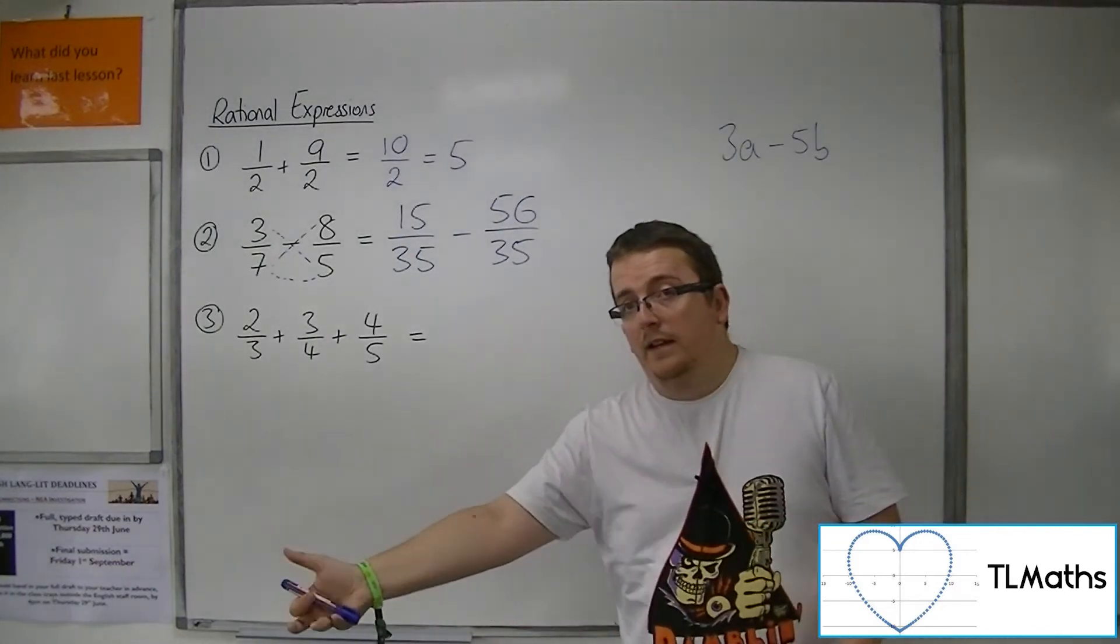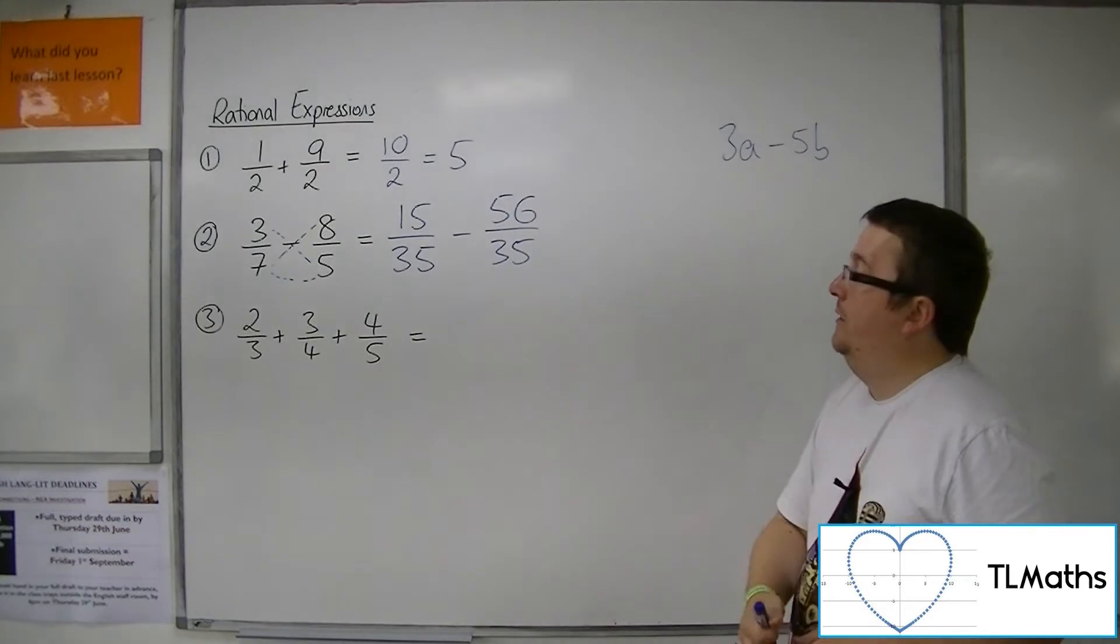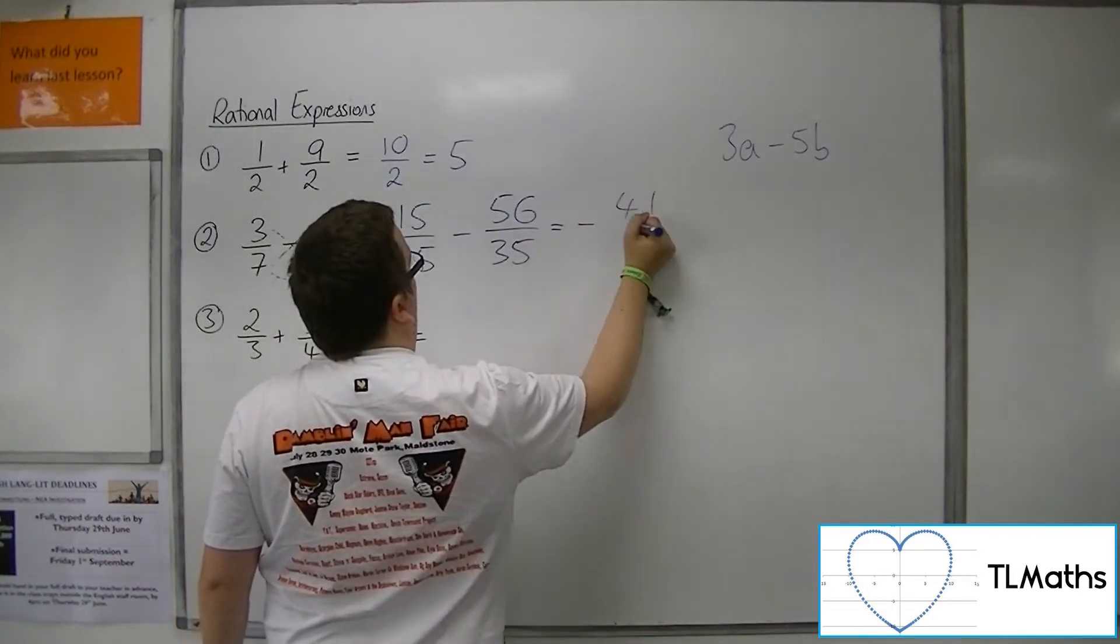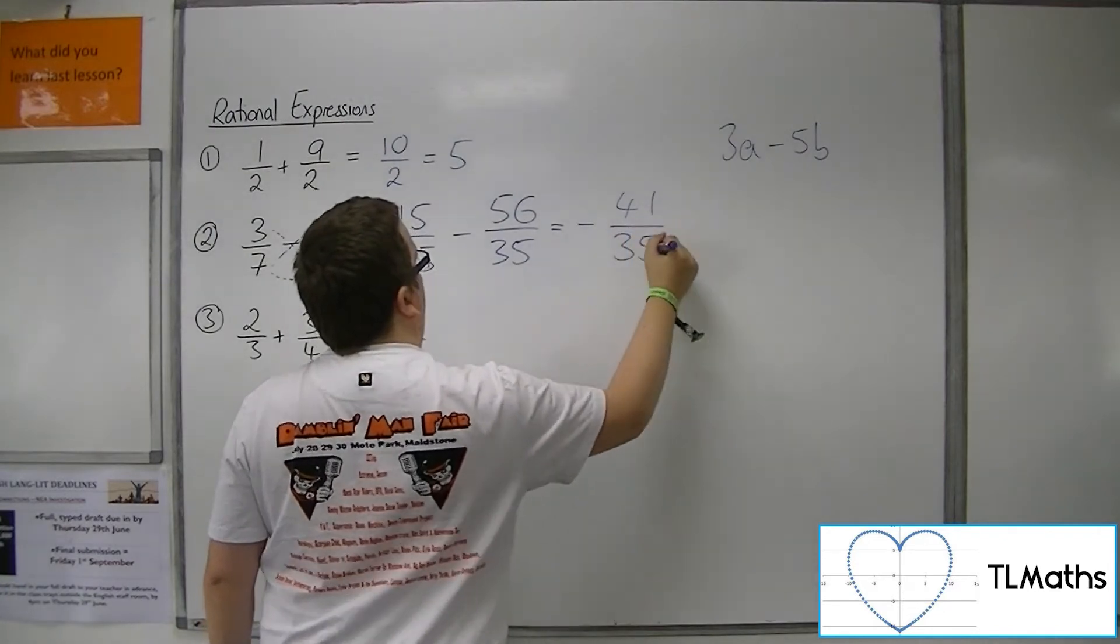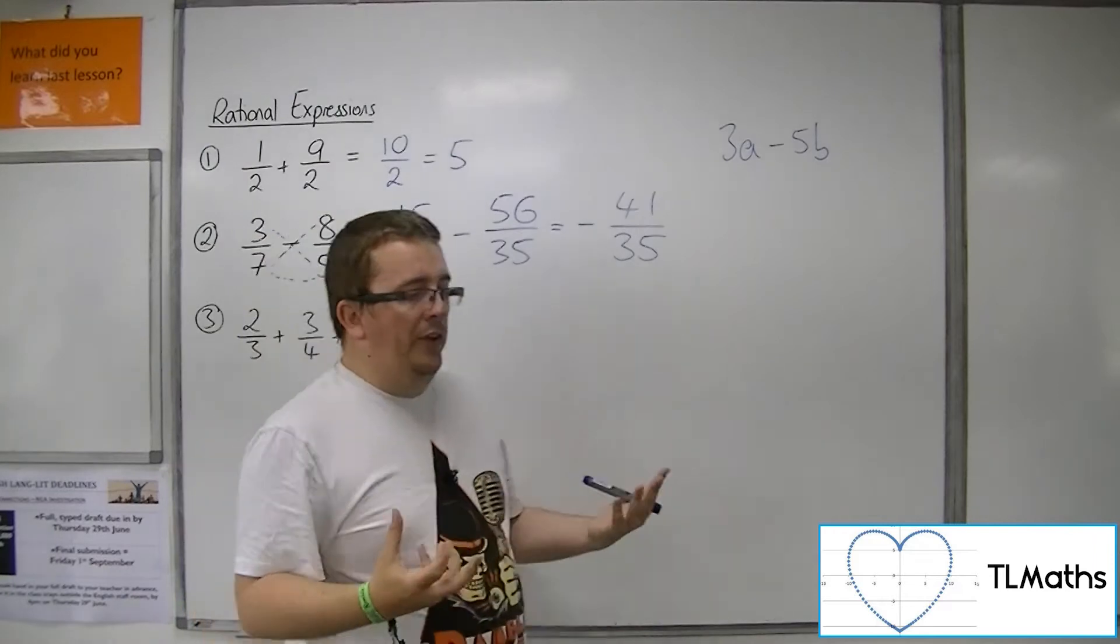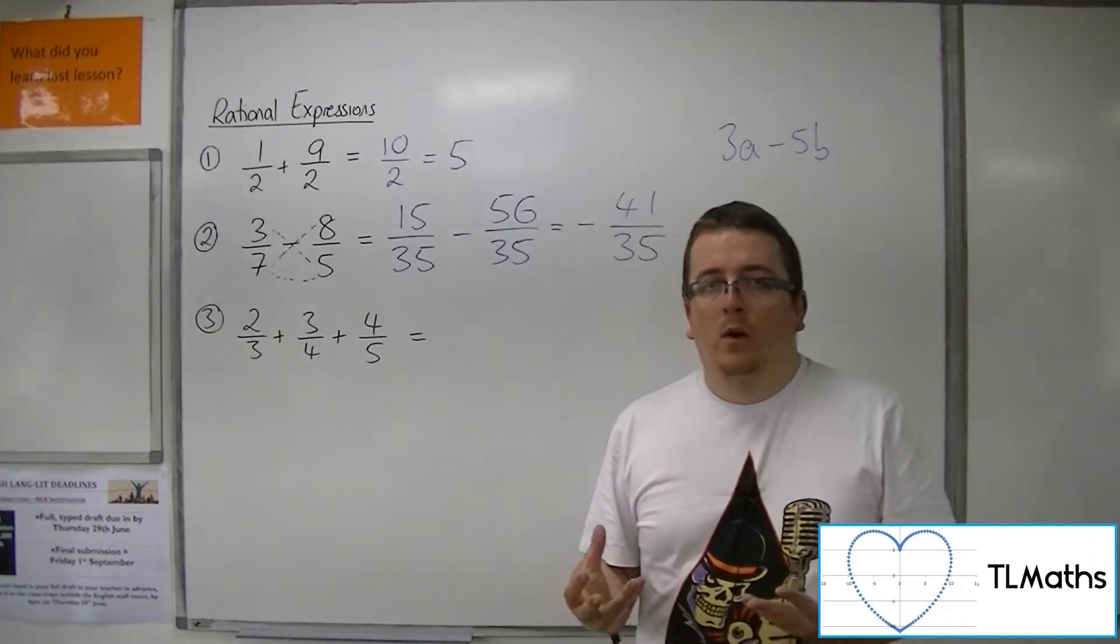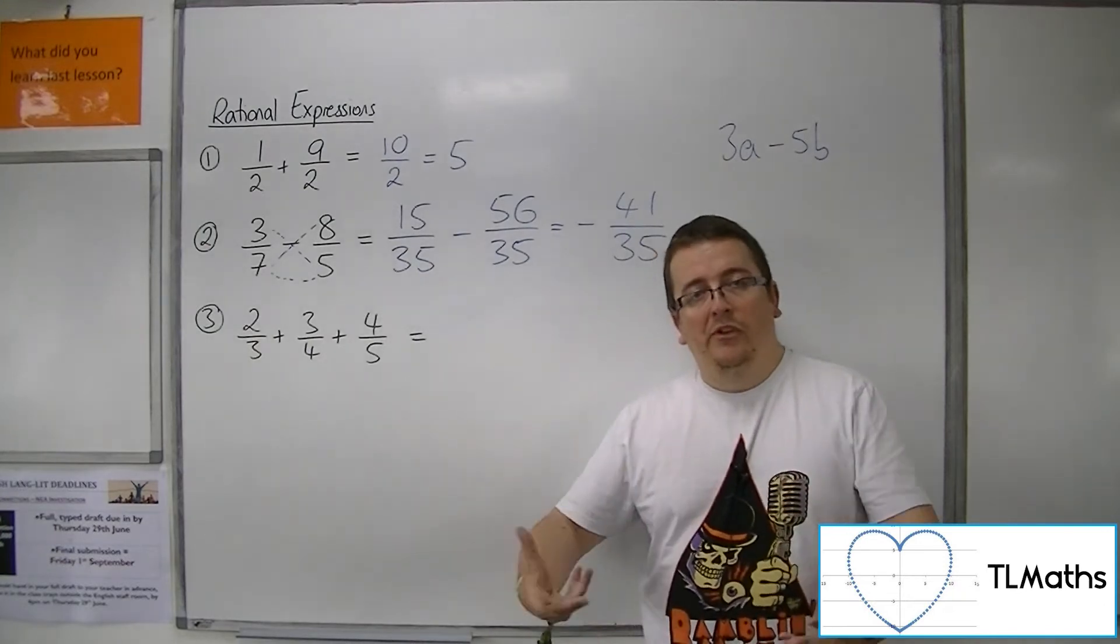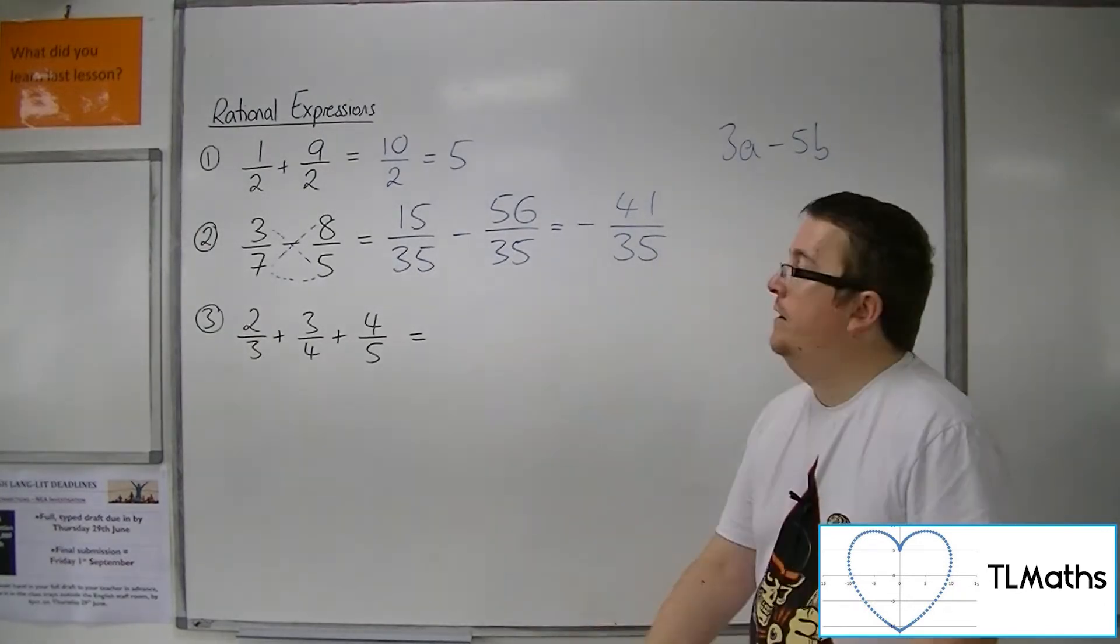It's like having 15 C take away 56 C. So this gives us minus 41 35ths. OK. So once I've got this common denominator, once I've got this commonality, collecting like terms, I'm able to combine the fractions.